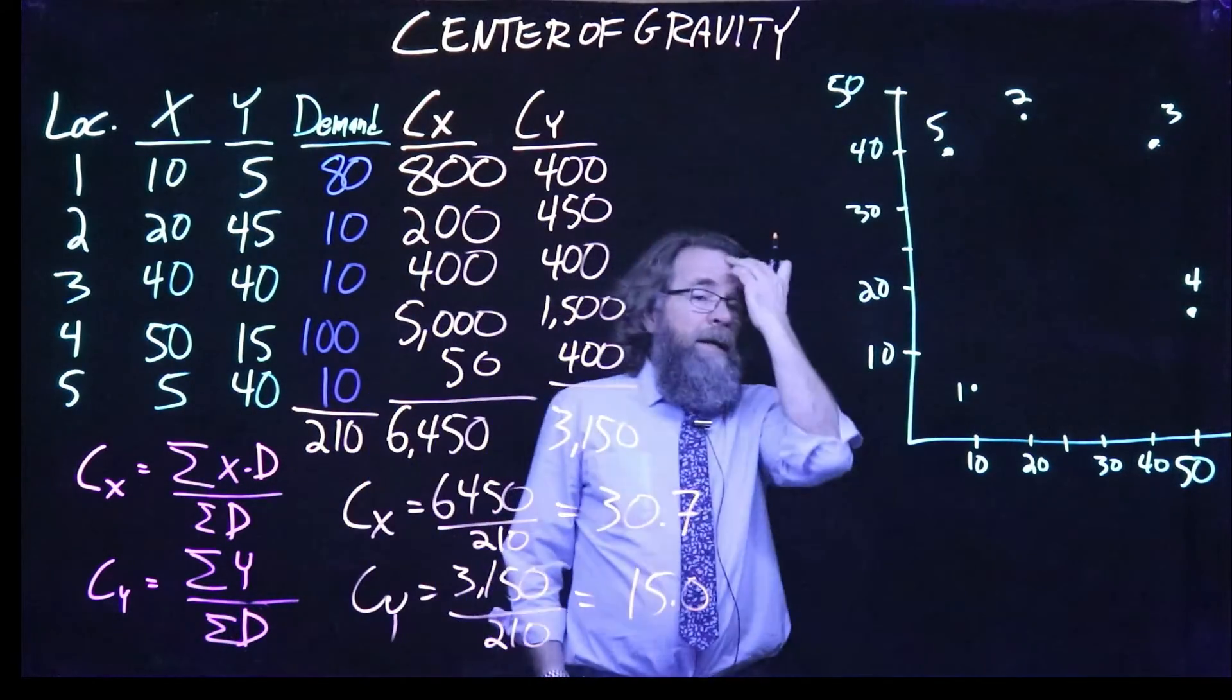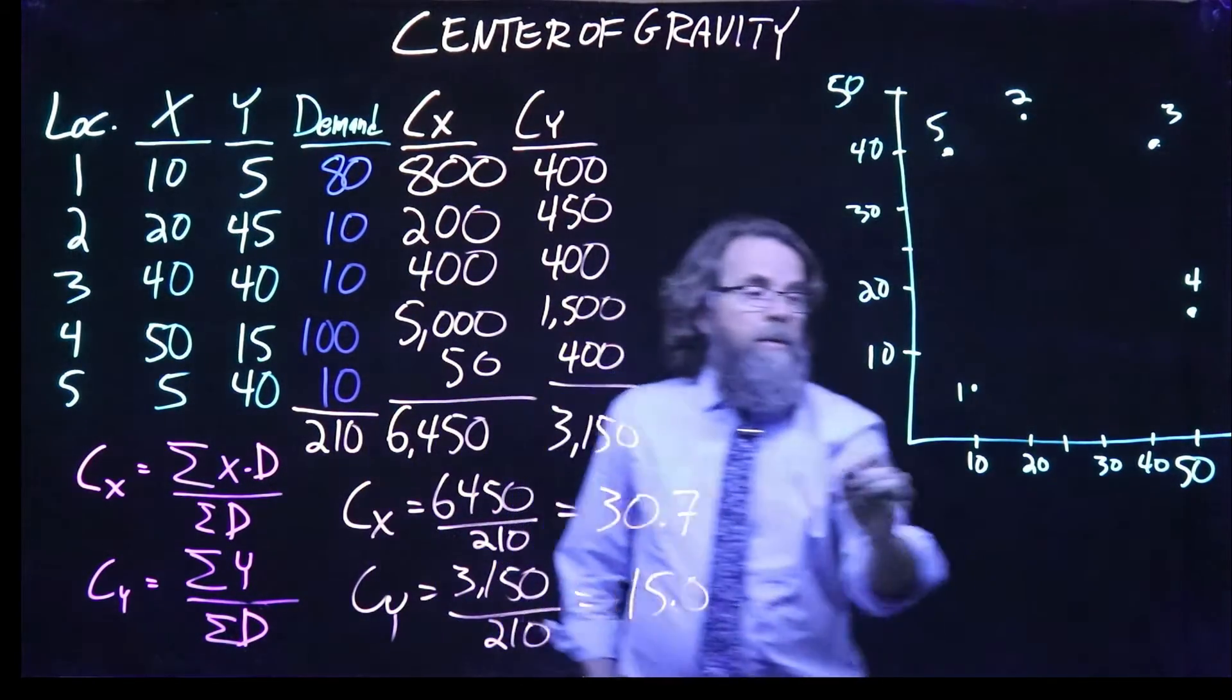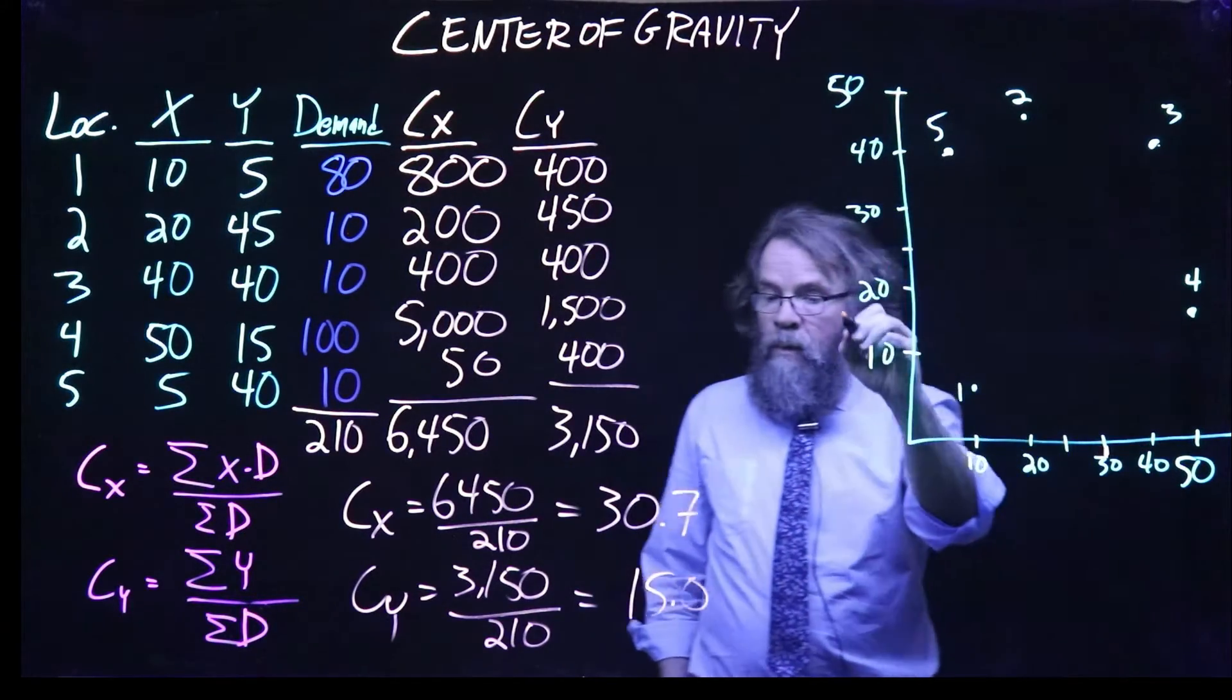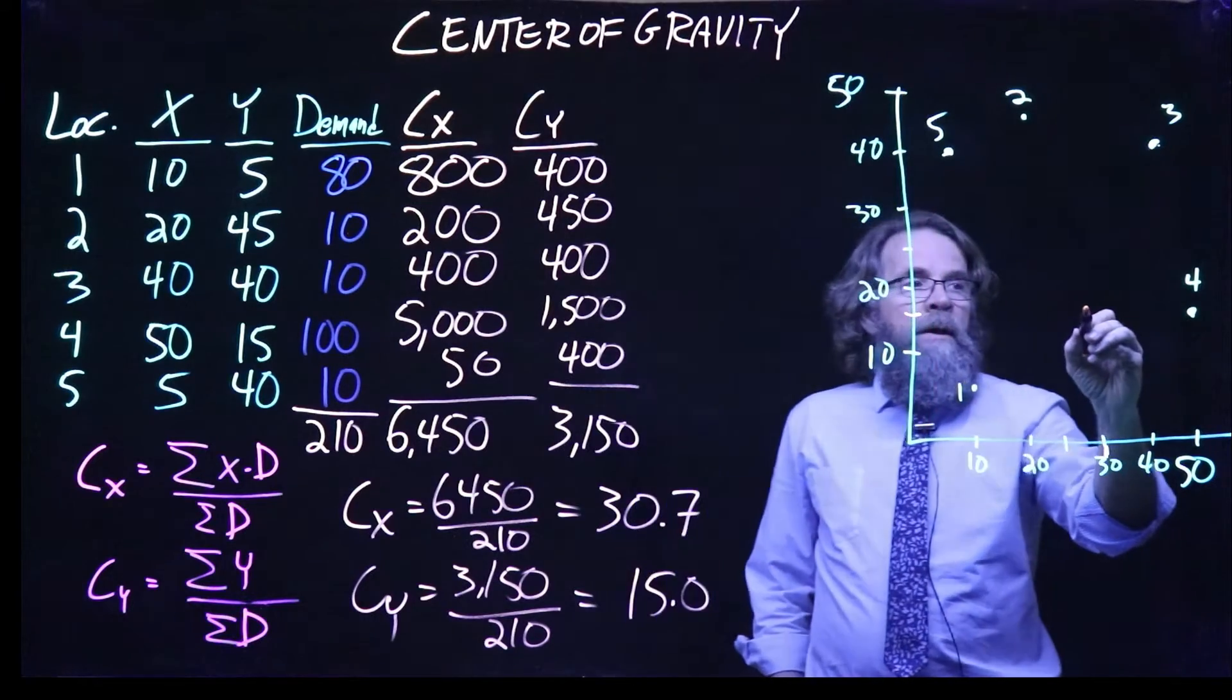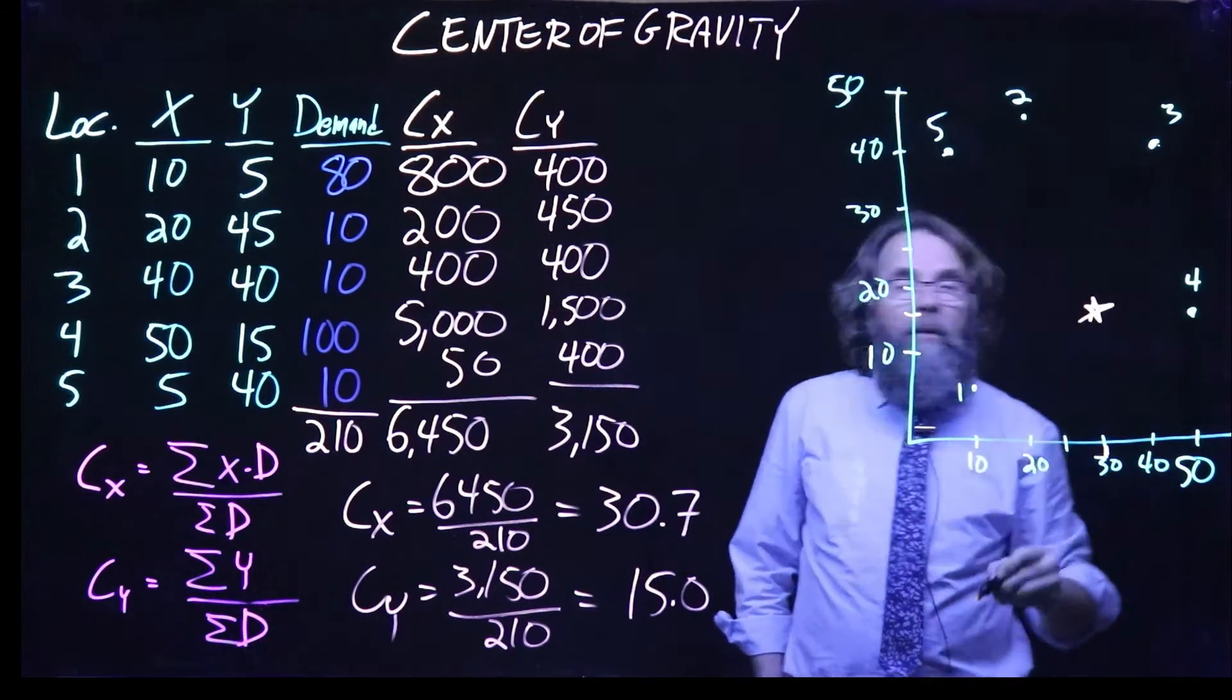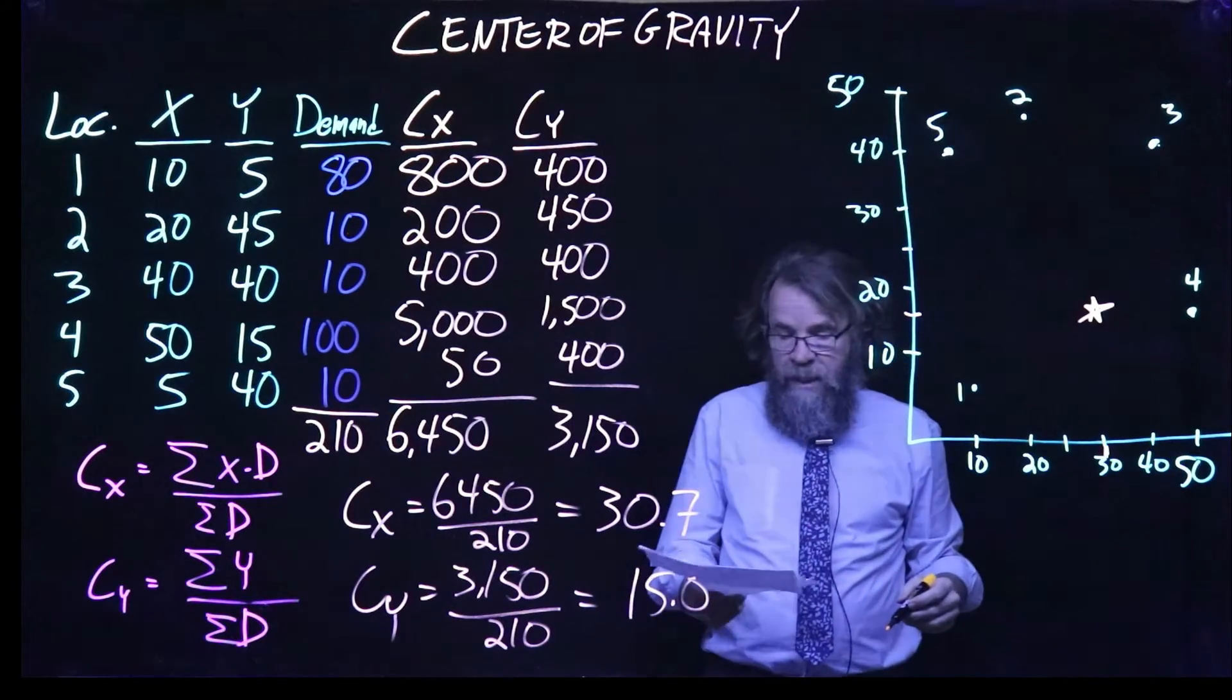So our ideal X coordinate is 30.7, which is going to be here. And our Y coordinate is 15, which is here. And so we get a point which is right there.